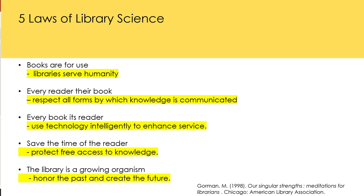The five laws of library science have been reinterpreted many times, most notably by Michael Gorman, a librarian, library scholar and writer, as well as past president of the American Library Association and an editor of the AACR2. He suggested that a more timeless version of the laws should be: libraries serve humanity, respect all forms by which knowledge is communicated, use technology intelligently to enhance service, protect free access to knowledge, and honour the past and create the future.